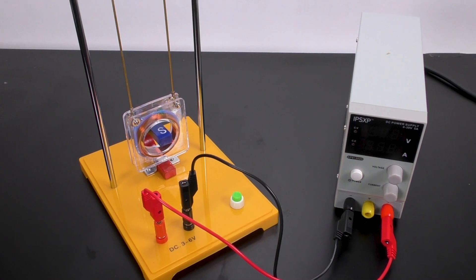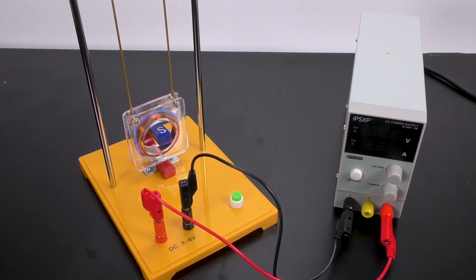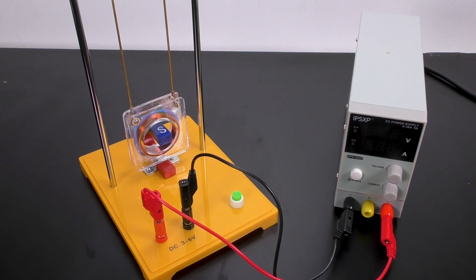The first activity is to show how we can produce motion. When the electricity flows through the coils, it will produce a magnetic field. This magnetic field will interact with the magnetic field of the magnet, causing motion.